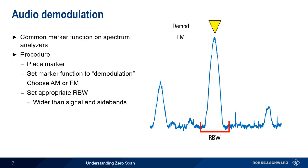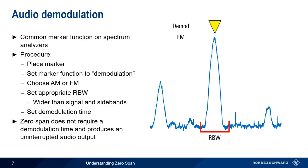In normal swept mode, we would also need to set the demodulation time — in other words, how long our sweep pauses and demodulates the signal before resuming the sweep. In Zero-Span mode, however, the resolution bandwidth is not sweeping, so demodulation time is essentially infinite, and we get an uninterrupted audio output.